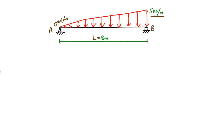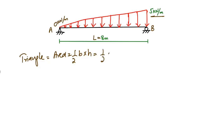Please follow my steps — it's a really easy method to find out the support reactions for this kind of beam, whether there is a uniformly varying load, triangular load, or trapezoidal load. The first step is to find out the area of this load. Since it's a triangular load, the triangle area can be found using: Area = half × base × height. The base is the length of the triangle, which is 8 meters, and the height is 5 kN/m.